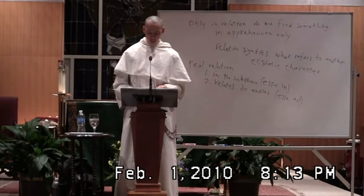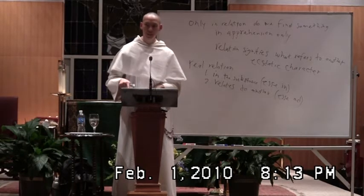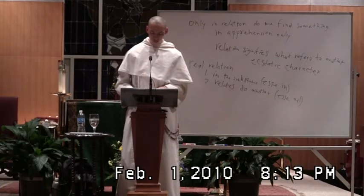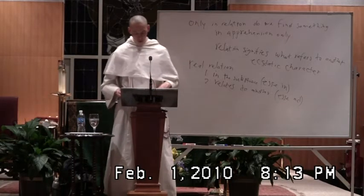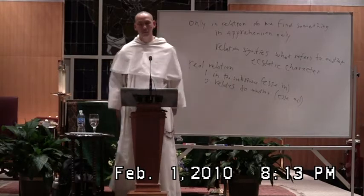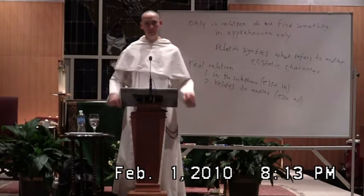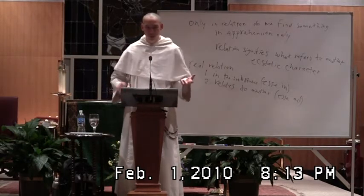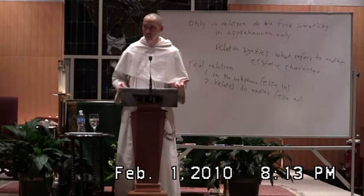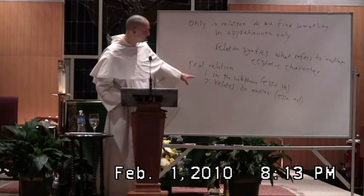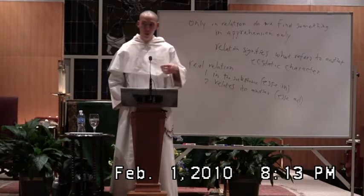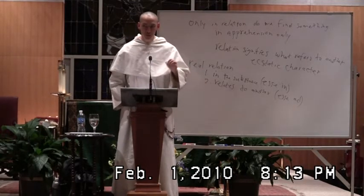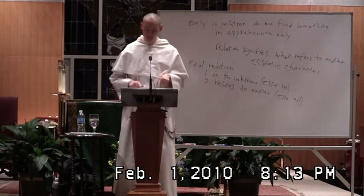We also have the esse ad: the two-foot snake is only half as long with respect to something else that is four feet. Here when we say it's directed toward — if I say I'm twice as much and you say 'twice as much as what?' and I say 'just twice as much, not with respect to anything else' — well, that wouldn't make sense. Esse in is in the thing, but then there's a second aspect: order toward something; it's with respect to something else, not just itself.